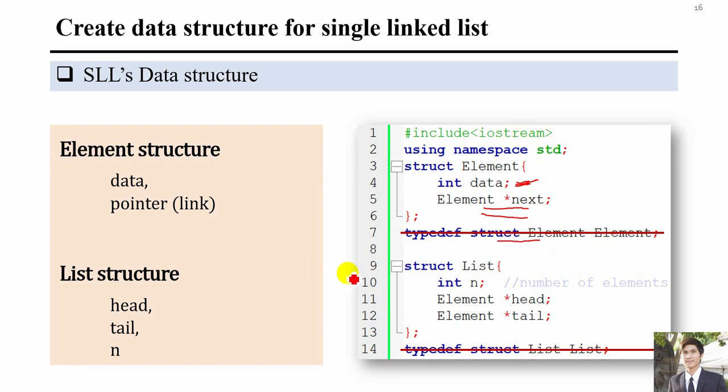Next, we need to create a list structure. Inside the list, we need to know the number of elements, and what the head and tail are. Head and tail are of type element — the first element is the head, and the last is the tail. We will keep adding elements and connecting them to build the list.